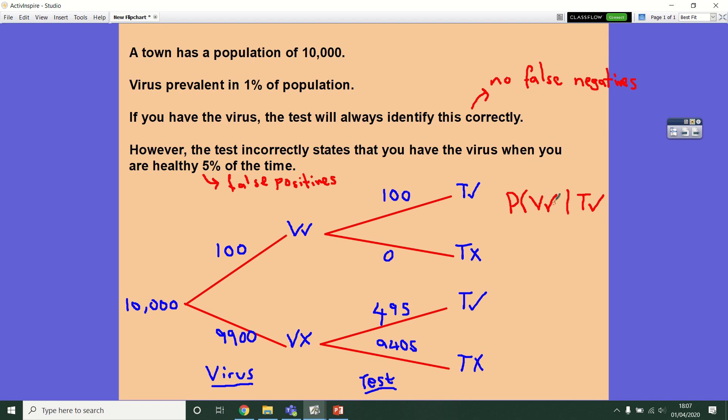So the chance you are infected, given that you're told that you are. Now we can work this out using our tree diagram. If we find the parts that we're given, the test testing positive, that's going to be this part of the diagram or possibly this part of the diagram.